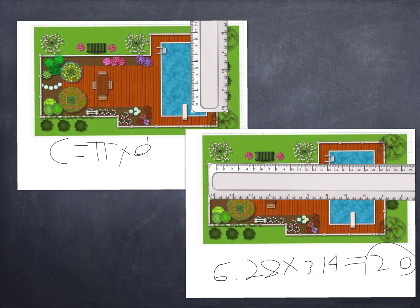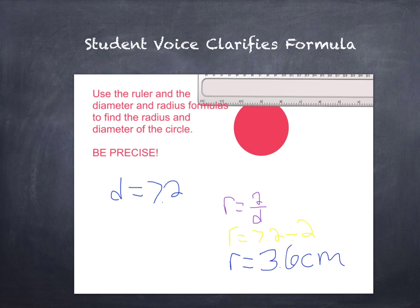So 20 is our area for this bush here. To figure out the diameter, I used the ruler and got 7.2 centimeters. To figure out the radius, you have to do the diameter divided by 2.